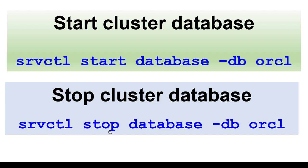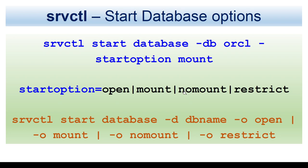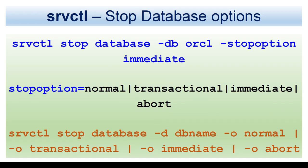Remember: you can't specify the node option for the database command — it will start the database across all nodes, stop the database across all nodes, and show status across all nodes. When you start the database, you can specify the start option: -o open, -o mount, -o nomount, or restrict. Similarly when you stop the database, you can specify stop option: normal, transactional, immediate, or abort using the -o option.